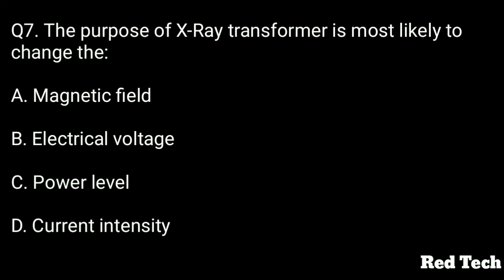Question number seven: The purpose of an X-ray transformer is most likely to change what? Magnetic field, electric voltage, power level, or current intensity? The right answer is option B, electrical voltage. Converting low voltage to high voltage is the working category of an X-ray transformer.